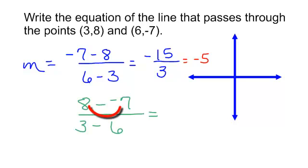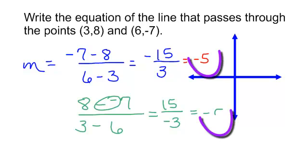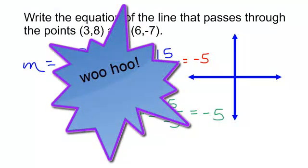In the numerator, don't forget, minus a negative becomes a positive. That would be 8 plus 7 is 15 divided by 3 minus 6 is negative 3. 15 divided by negative 3 is still negative 5. We still got the same slope. That is not magic. That is mathematics.